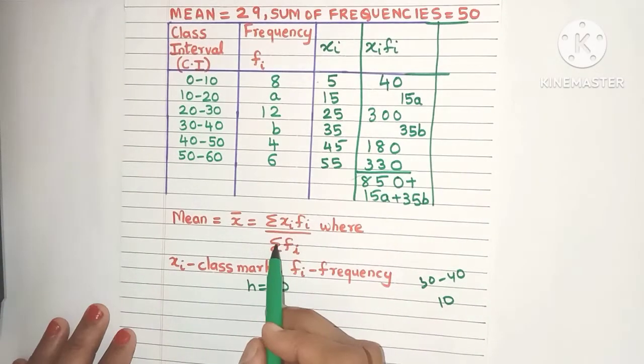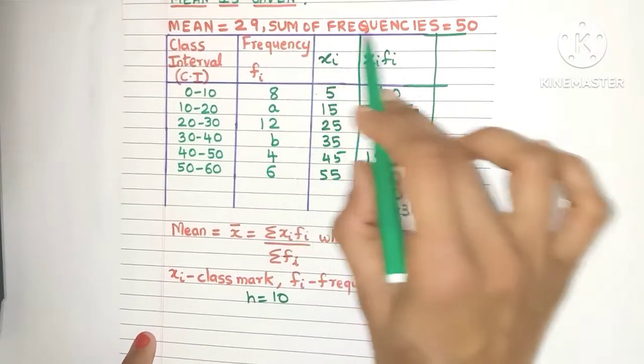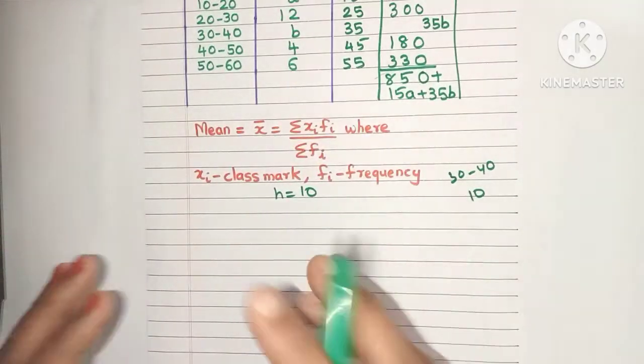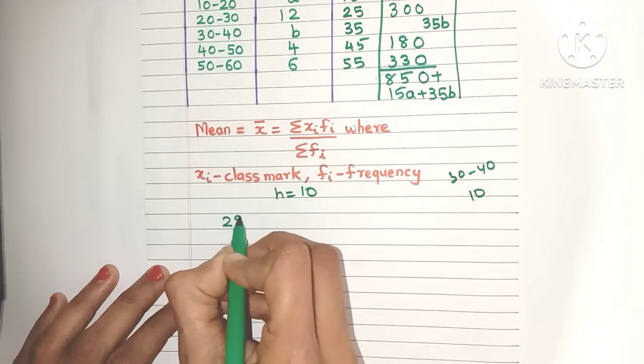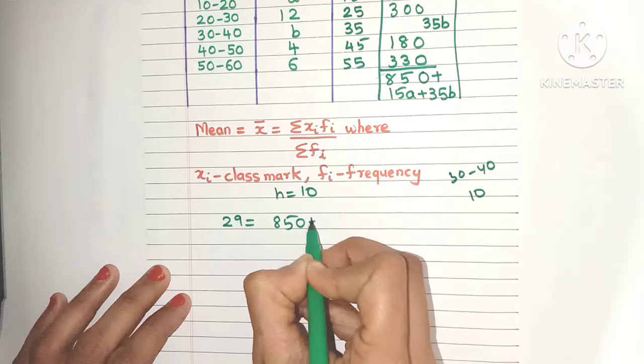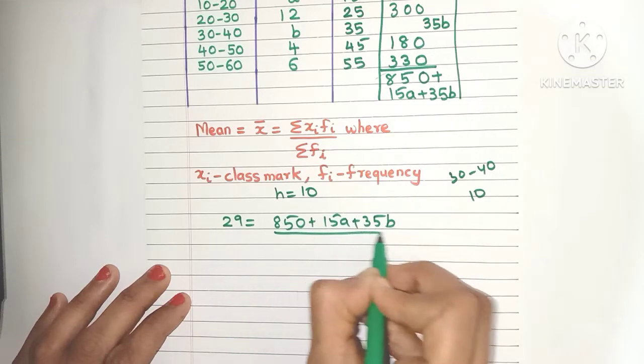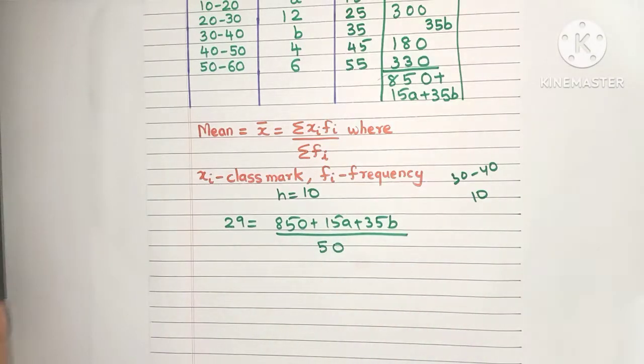Now look at the formula again. We need sigma fi, but that's already given to us. Sum of frequencies is 50. We also know the mean. So let's substitute all these values. x̄, which is the mean, equals 29 equals sigma xi fi, which is 850 plus 15a plus 35b, divided by sigma fi, which is 50.